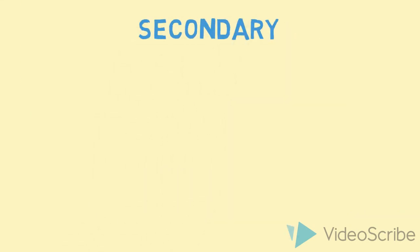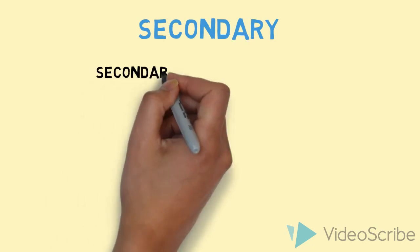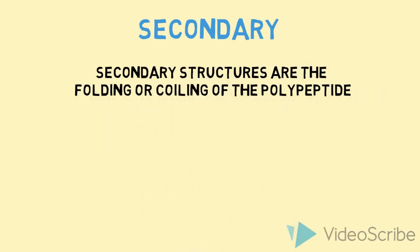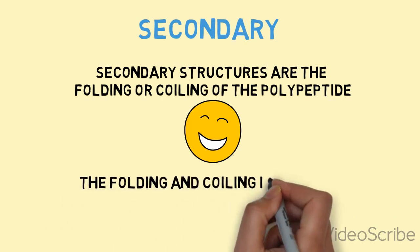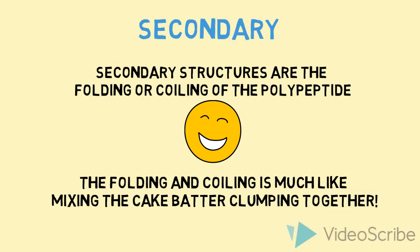When it comes to secondary, secondary structures are the folding or the coiling of polypeptides, as we remember. The folding and the coiling is much like mixing the cake batter and the clumping together.